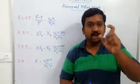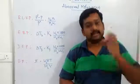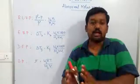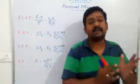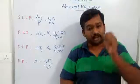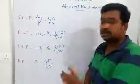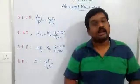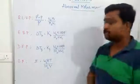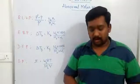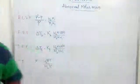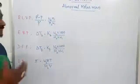In such cases, the theoretically calculated molar mass will differ from the experimentally observed molar mass. To account for such differences — whenever there is a difference between the actual molar mass and the experimentally determined molar mass — we have to introduce a correction factor into all these colligative properties. That factor is called the Van't Hoff factor, and that is our next concept in this unit.